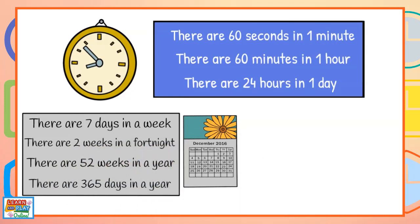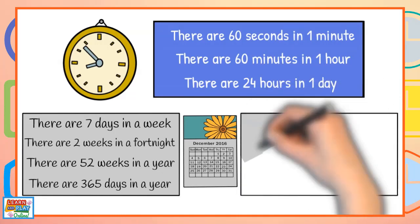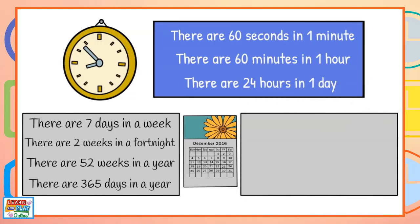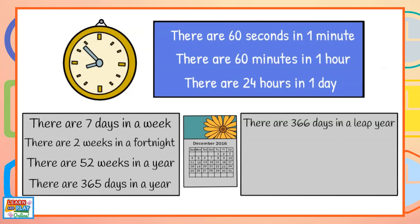There are 365 days in a year. There are 366 days in a leap year. A leap year occurs every 4 years.